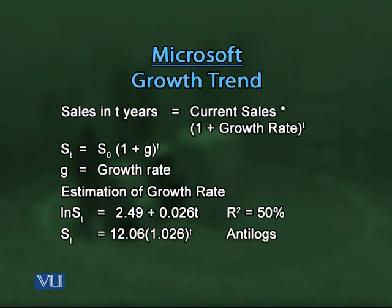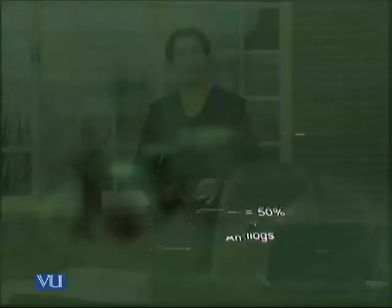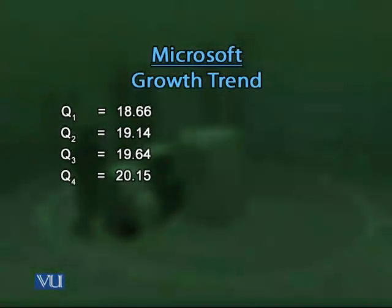To convert back to the original format, we take the antilogs of the result, giving ST = 12.06 × (1.026)^T. Substituting T = 17, 18, 19, and 20 for the four quarters of 1996, the forecasted electricity sales are: 18.66 for Q1, 19.14 for Q2, 19.64 for Q3, and 20.15 for Q4.